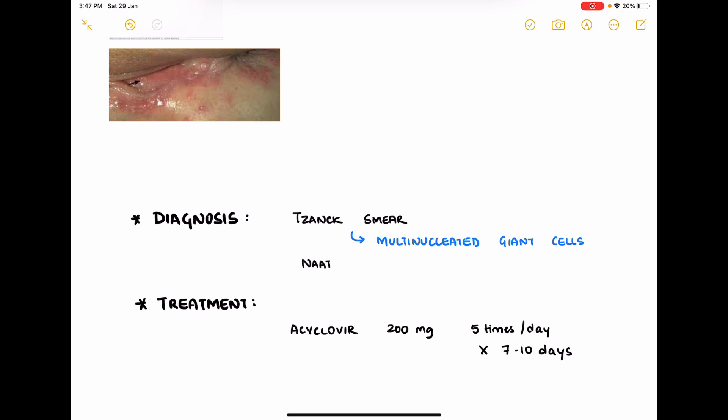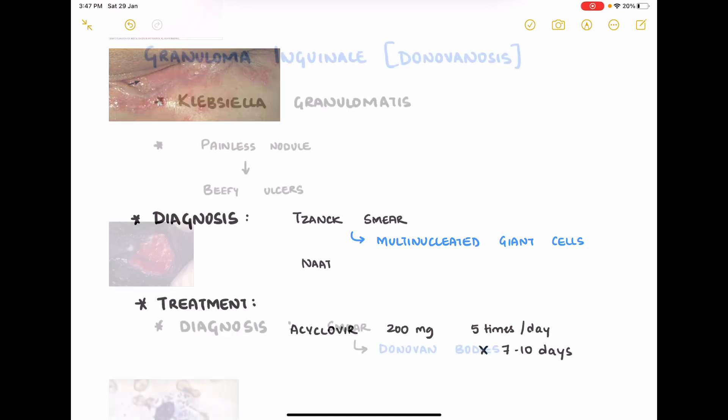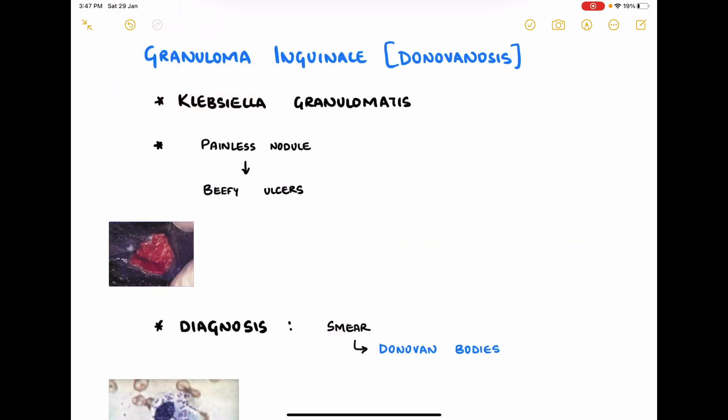The second condition is granuloma inguinale, also called donovanosis, caused by Klebsiella granulomatis, which is a gram-negative bacteria. It starts as a painless nodule which evolves into a beefy ulcer as shown in the picture. The first picture here shows the beefy ulcer.